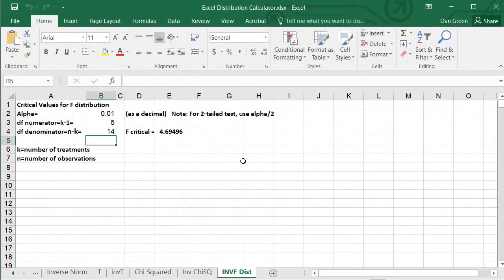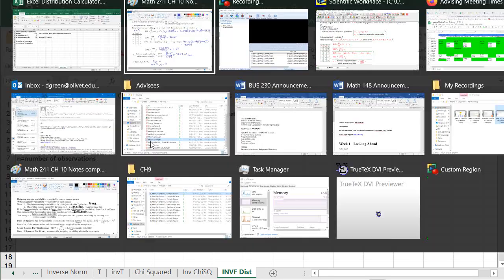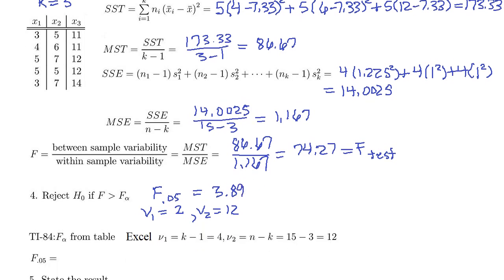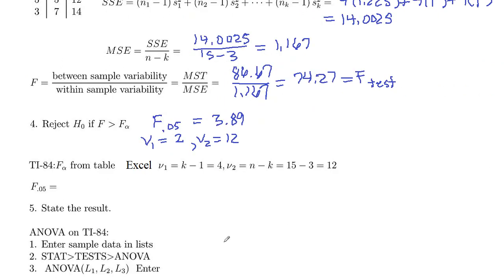So we can compute that with Excel. So our distribution calculator in the inverse F tab. So we've got 0.05 for alpha. Numerator degrees of freedom were 2. Denominator degrees of freedom were 12. 3.88. Or I guess if you round it, it's actually 3.89. So you can get that from the table in the book, but we got it from Excel.